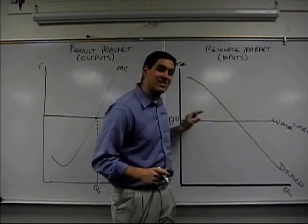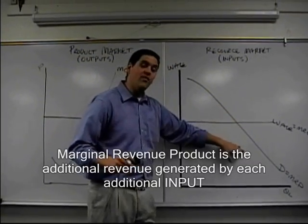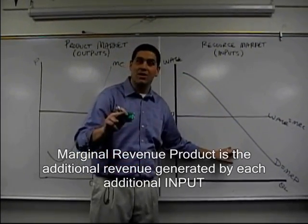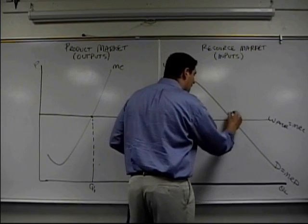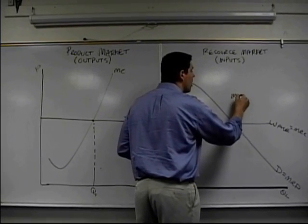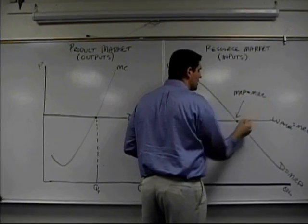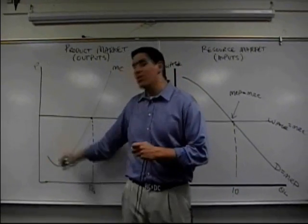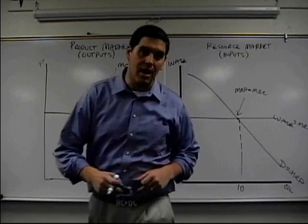The additional cost of hiring one more worker is set by the market. The additional revenue generated by those workers is downward sloping. It's the demand curve. Firms hire where MRP equals MRC. They'll hire, let's say, 10 workers. Over here, we're selling apples. Over here, we're hiring workers. Until next time.